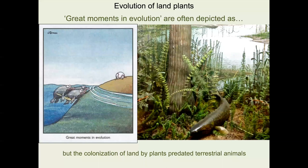My lab studies the evolution of land plants. Great moments in evolution are often depicted like this cartoon by Larson on the left, where fish developing limb-like appendages are longing to get onto land. But in reality, the evolution of animal life on land depended upon plants basically already being there, because there was no reason for animals to go up there until plants had already colonized the land.